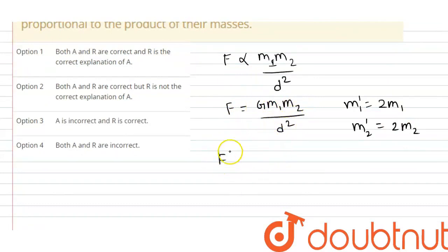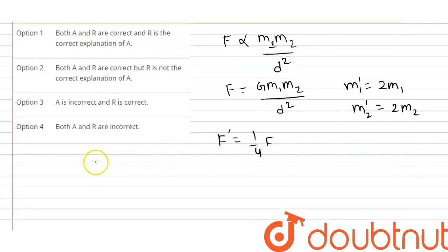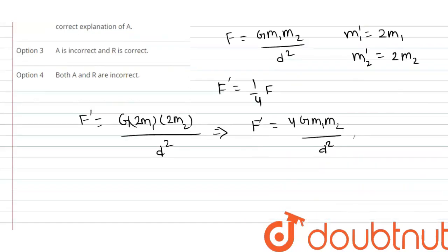Jho, humhara new force hooga F dash. Wohh one fourth time of F hooga. Yeh Assertion ke inder bata rukha hai. But, humh abh dekhti hain ki reality kiya hai. F dash is equal Z M1 ki jaga rakhna hooga M dash. M dash is equal 2 M1 and M2 dash, us ki jaga me rakhna hai 2 M2 divided by D square. So ye hojaega, F dash is equal 4 times of G M1 M2 divided by D square. So is ki value apne paas hai F. F dash is equal 4 times of F.